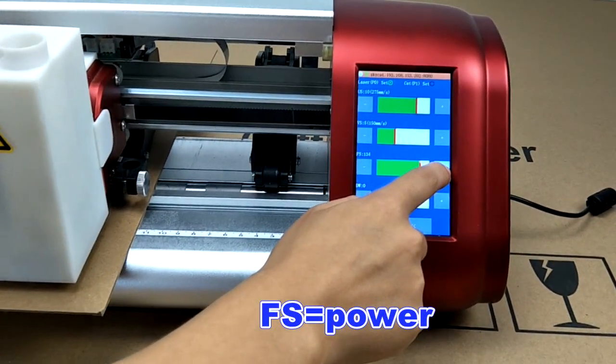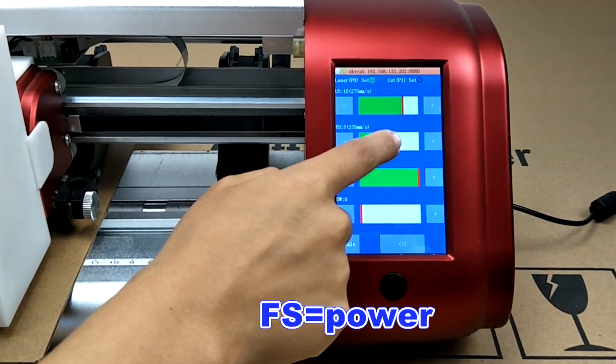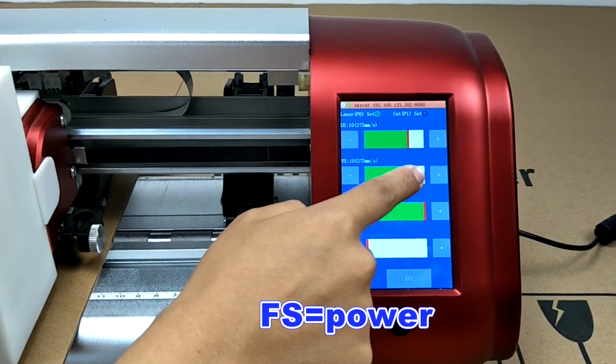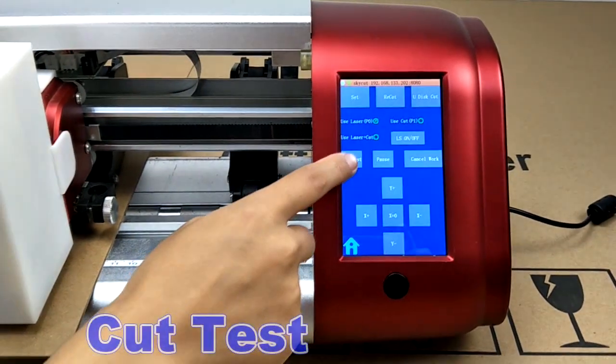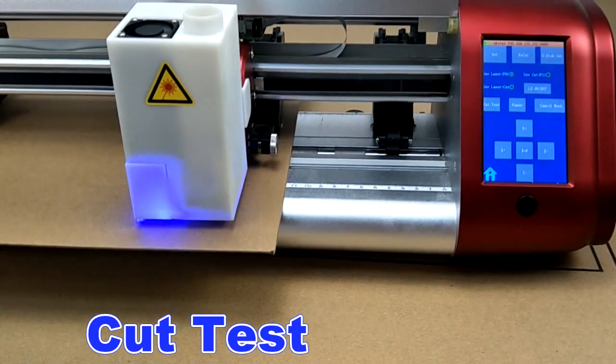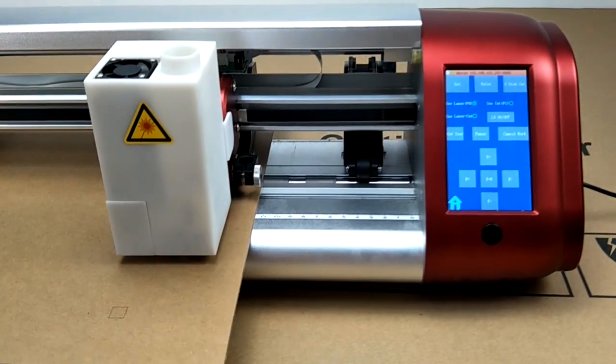And then we touch set to adjust speed and power. When we use laser, FF means power adjustment. After we set power and speed, press test cut. Let's check the result. It's good.